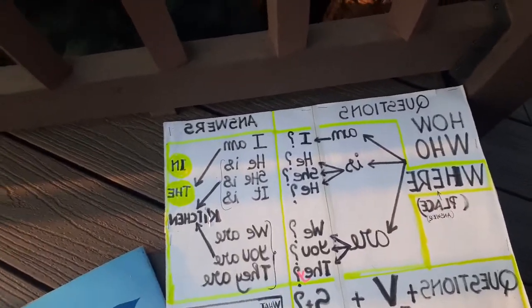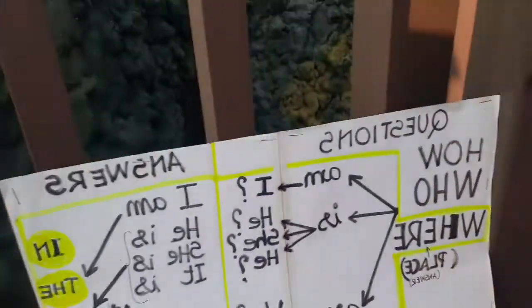So for questions, you just put: how, who, where — where is the place — and then you can answer in a simple way. You use: question word, plus verb to be, plus subject, and that gives you a very simple sentence. Can you see them clearly? Question: how, who, where, place.